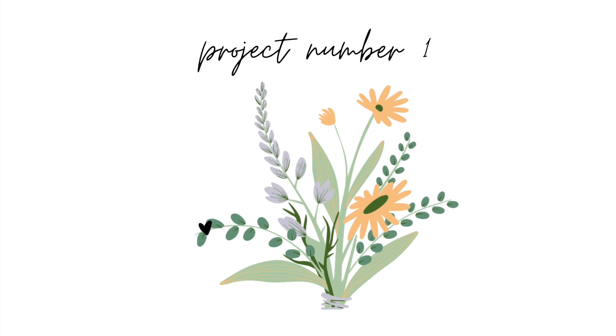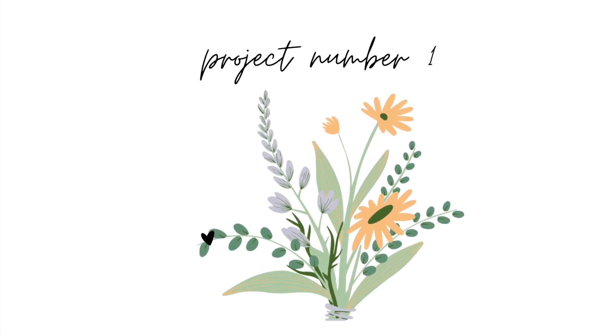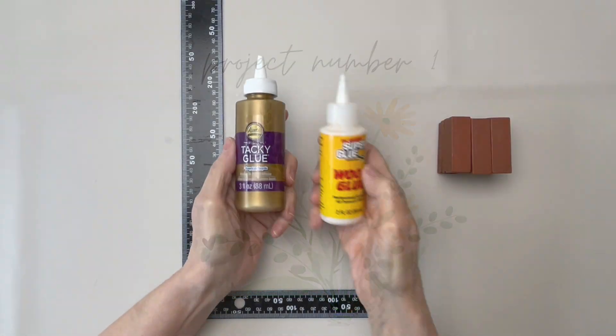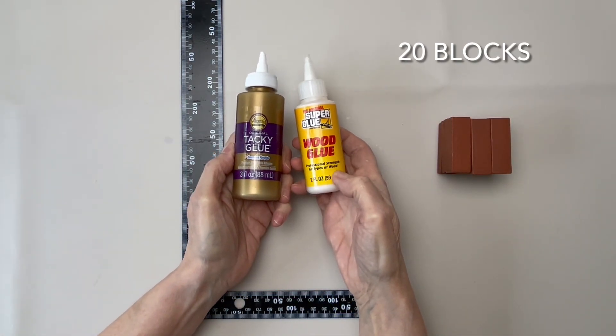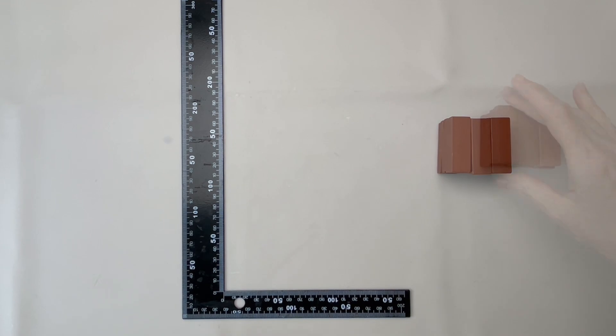The first project is coffee table or tiered tray decor. You'll need 20 blocks for this project. I'll be using Aileen's Tacky Glue for all the painted blocks and Super Glue's wood glue for all of the natural blocks. Both can be purchased at Dollar Tree.